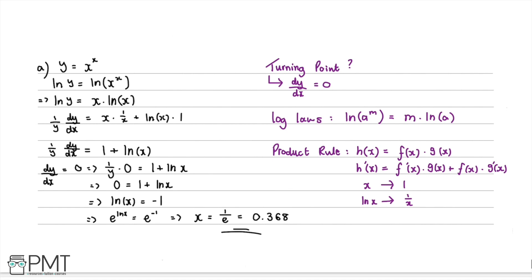This question was worth five marks. The first mark was for taking logarithms of both sides and using the exponent log law to reach ln(y) = x·ln(x). Two marks were awarded for correctly differentiating both sides to get (1/y)·(dy/dx) = 1 + ln(x). The fourth mark was for setting it equal to zero and reaching ln(x) = -1. The fifth mark was for the correct answer x = 1/e ≈ 0.368.